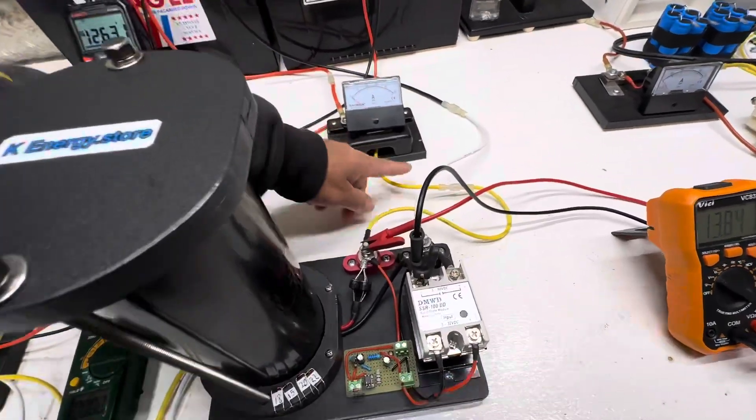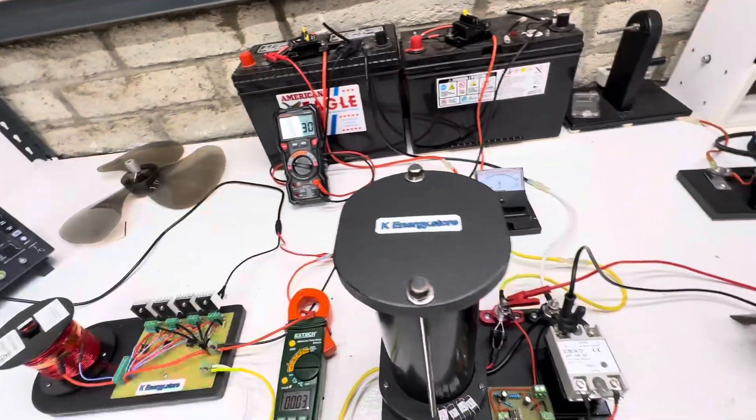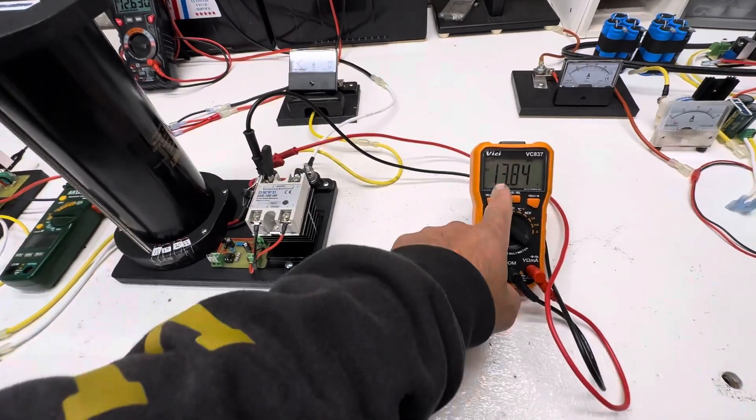So solid state relay. And then it goes through this amp meter, and then through here to this battery with the voltmeter. And then we'll be able to see how it's dumping, what voltage.